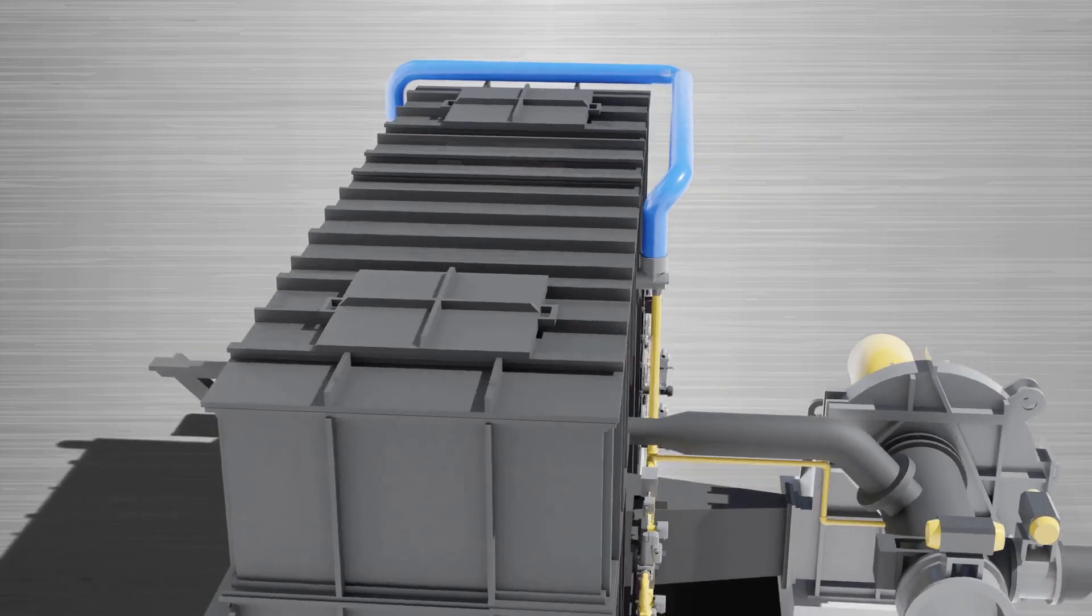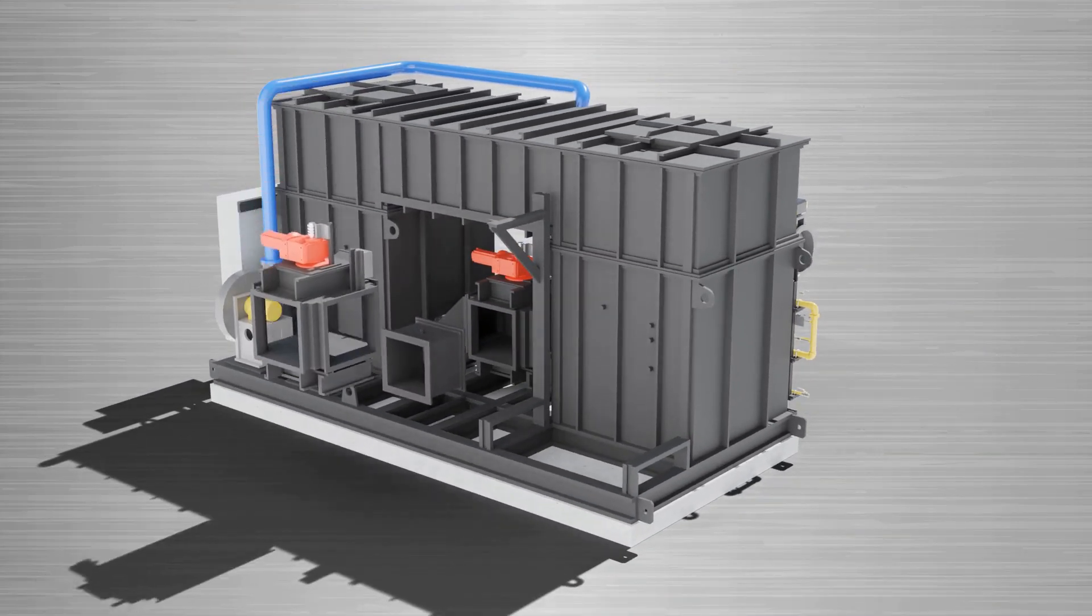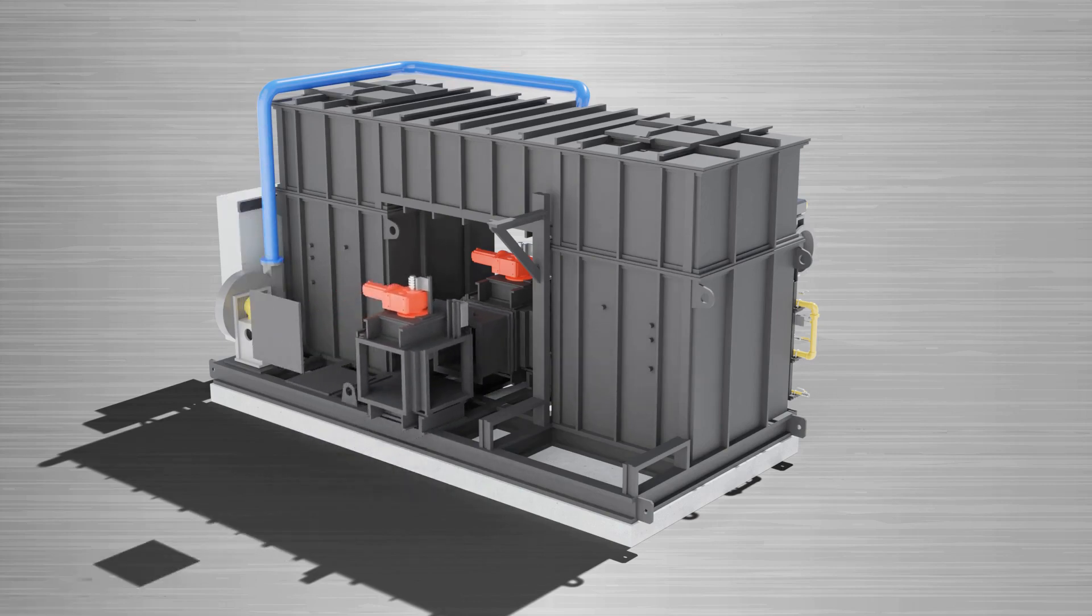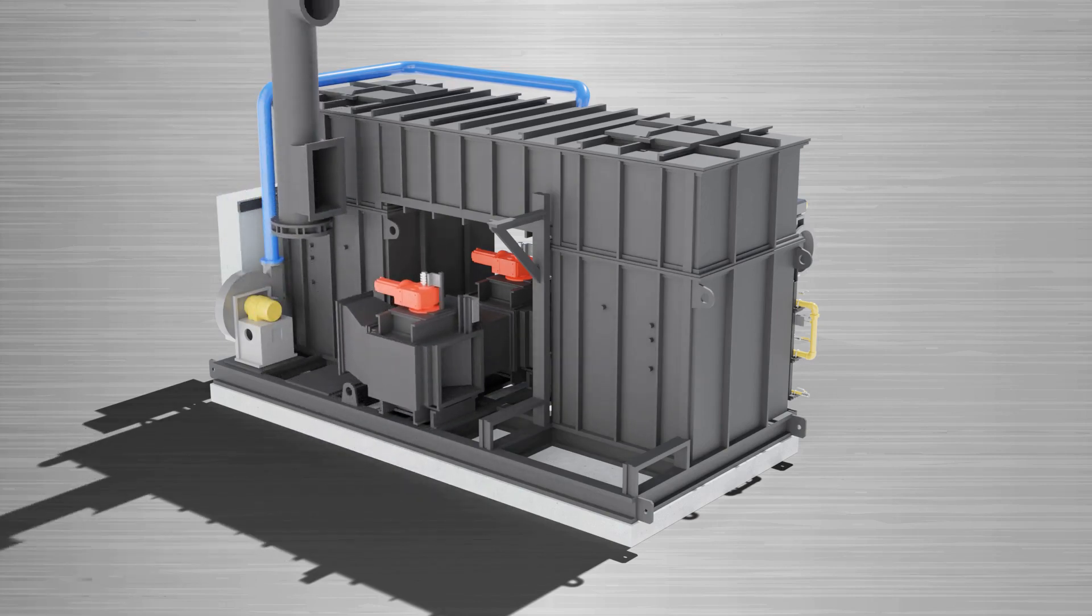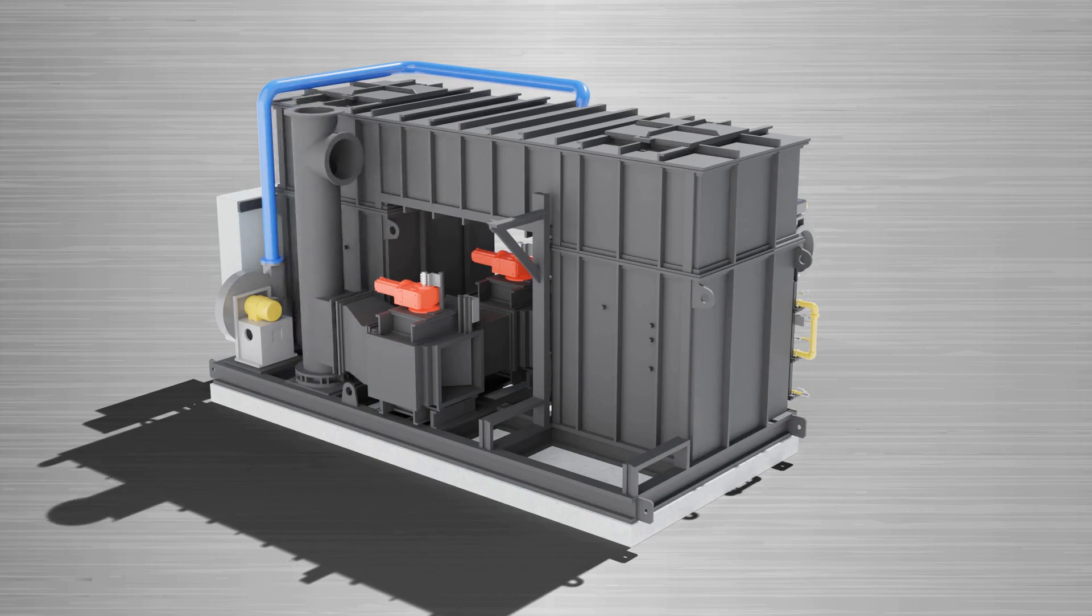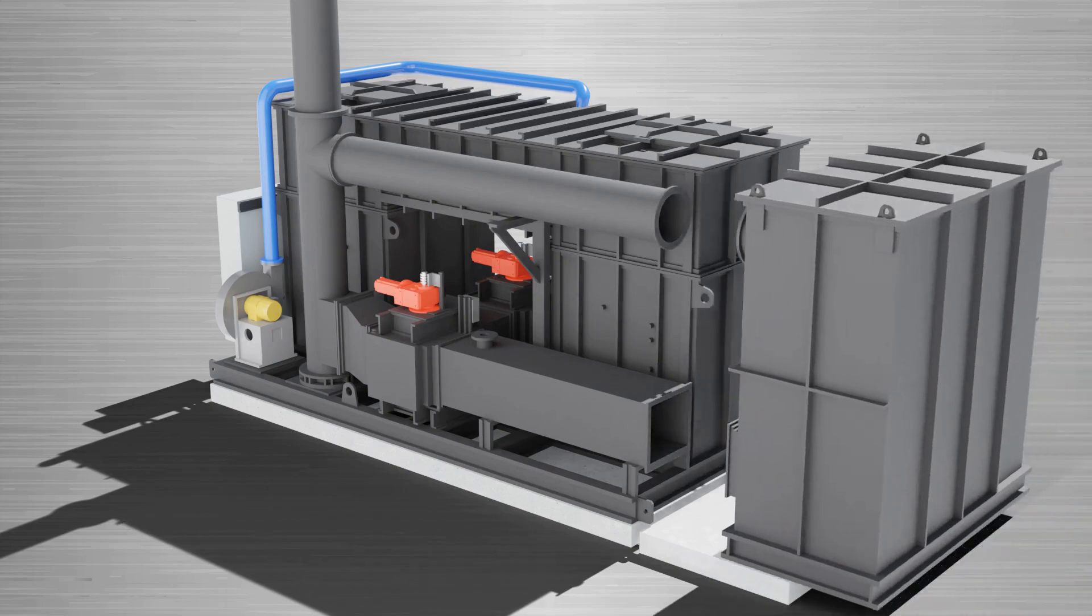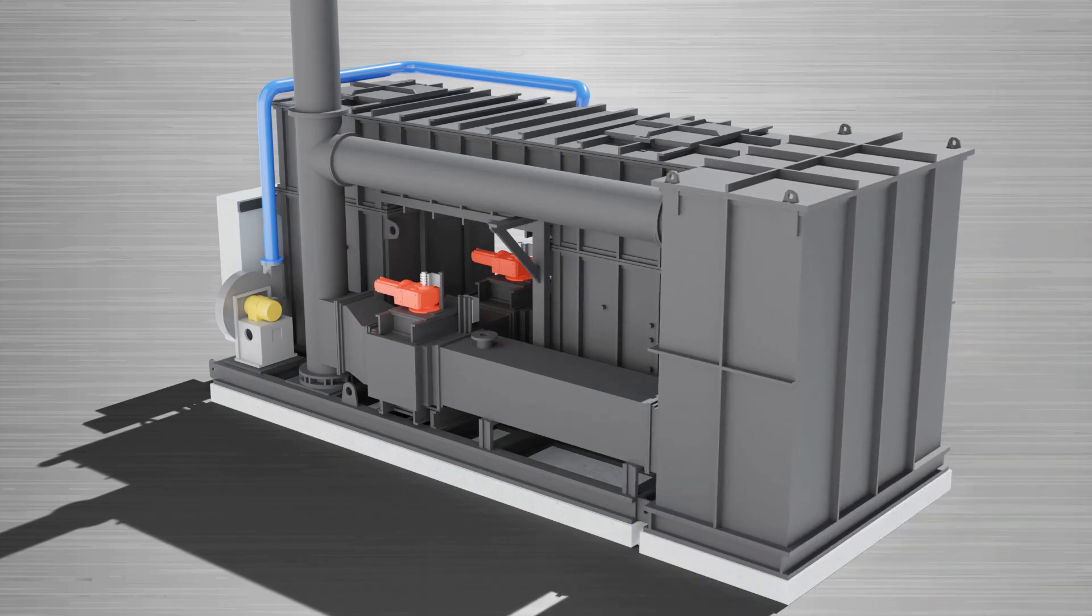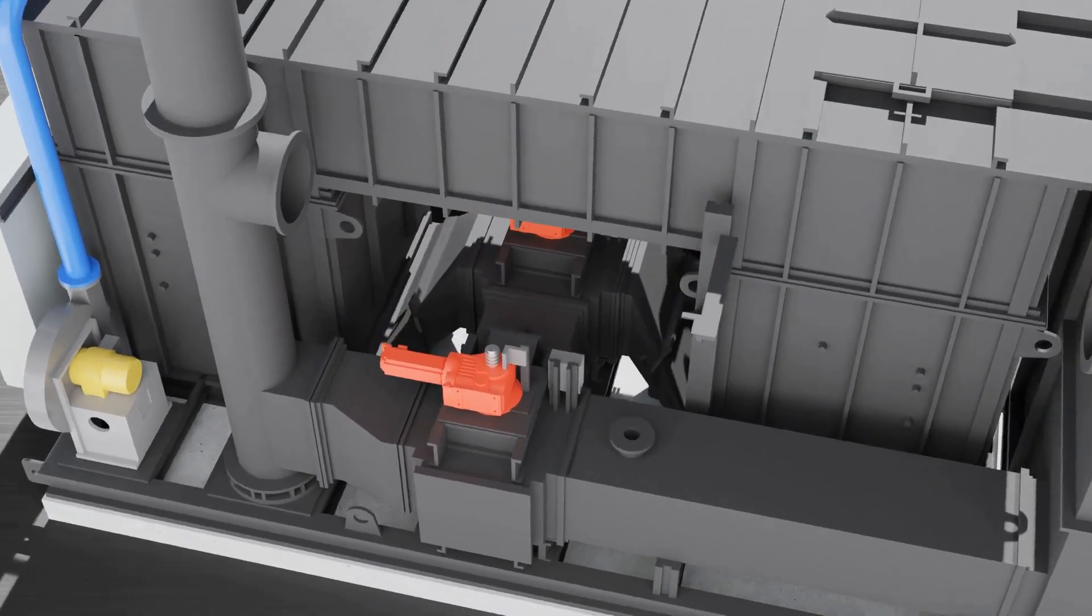The second add-on RTO option is a puff capture system. This system increases the destruction performance of the RTO from 98% to greater than 99%. The system consists of a second QS valve, puff capture chamber, and additional ductwork. The puff capture system collects puffs of untreated emissions that occur when the QS valve transitions.